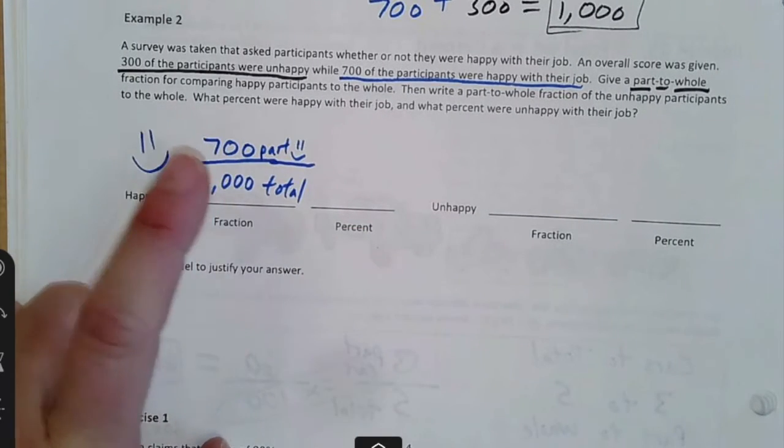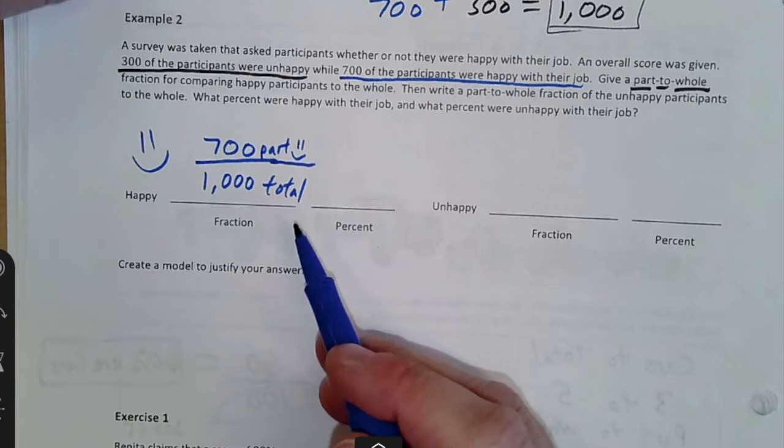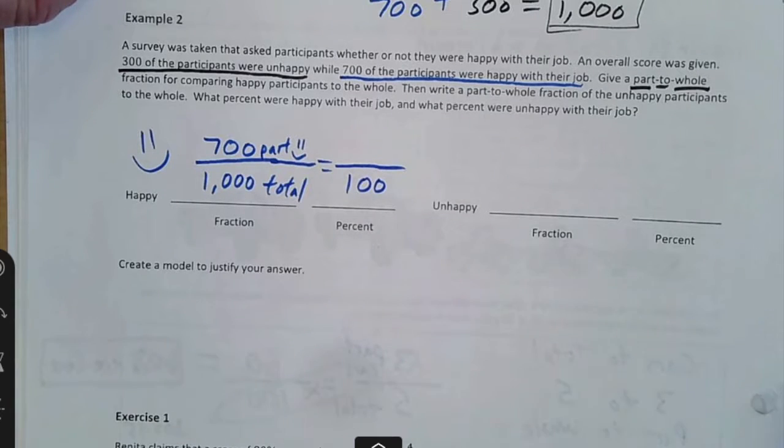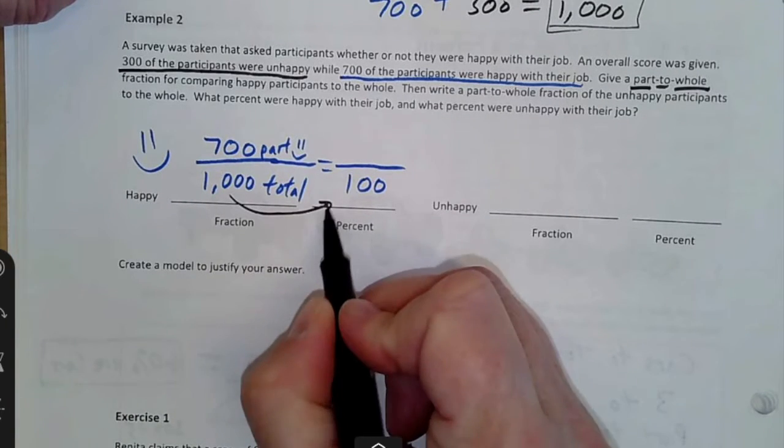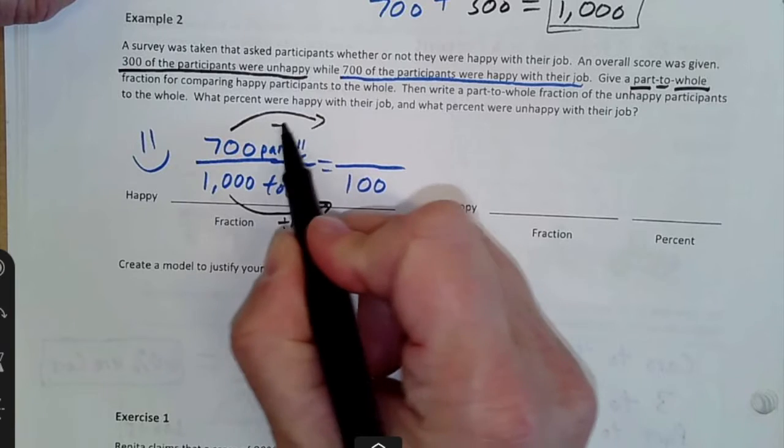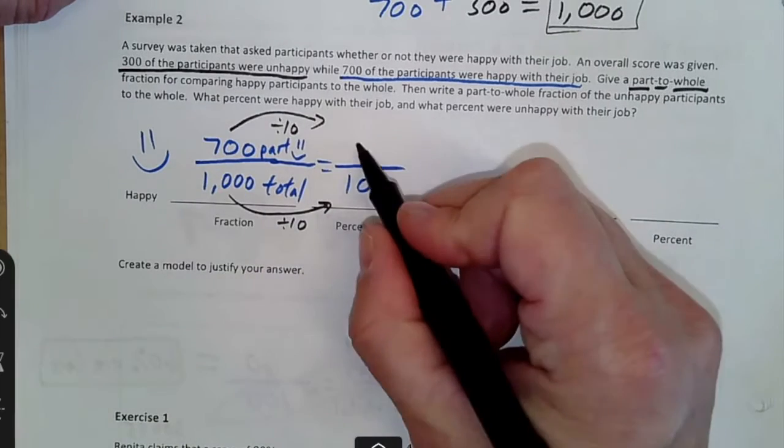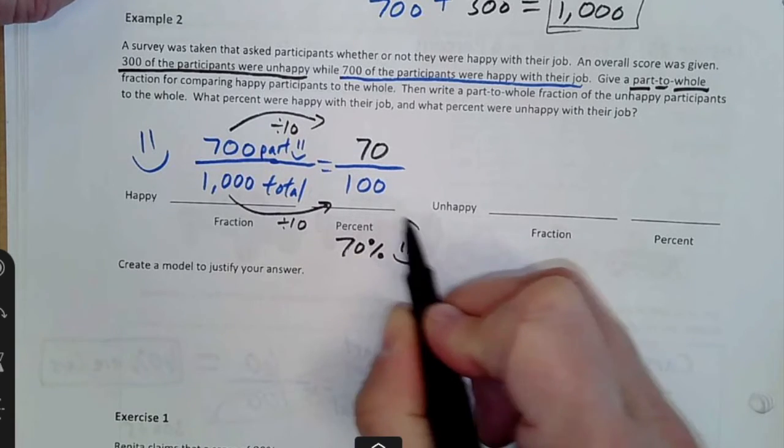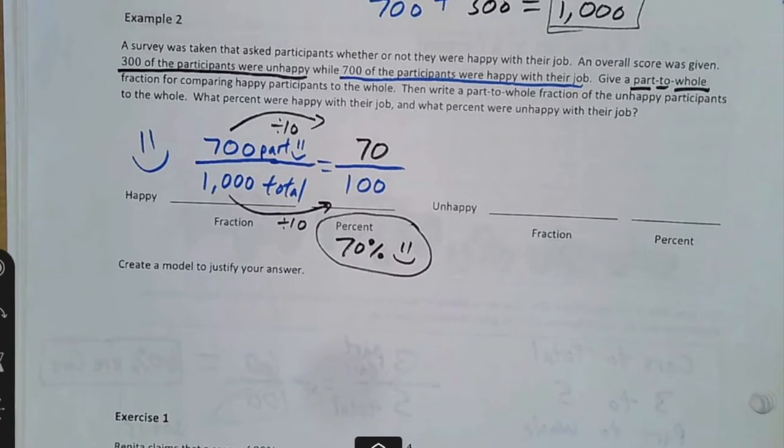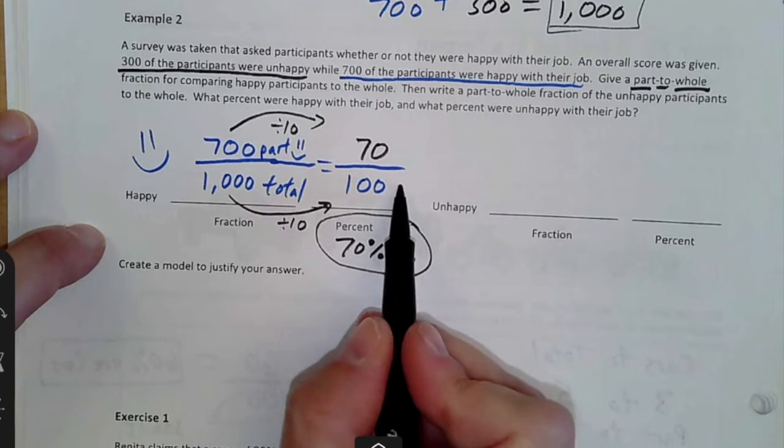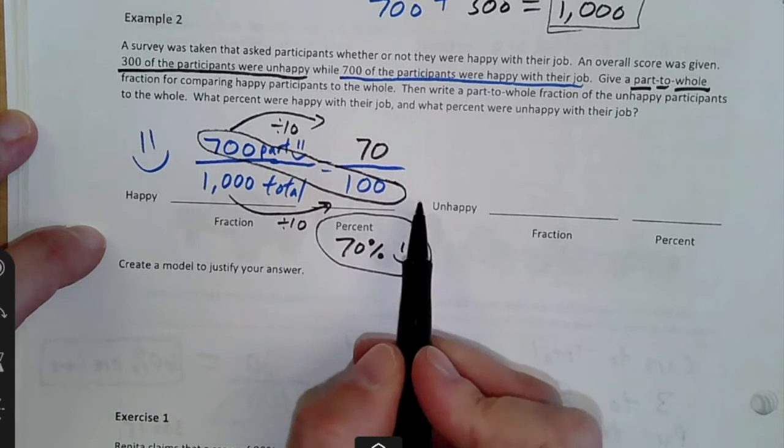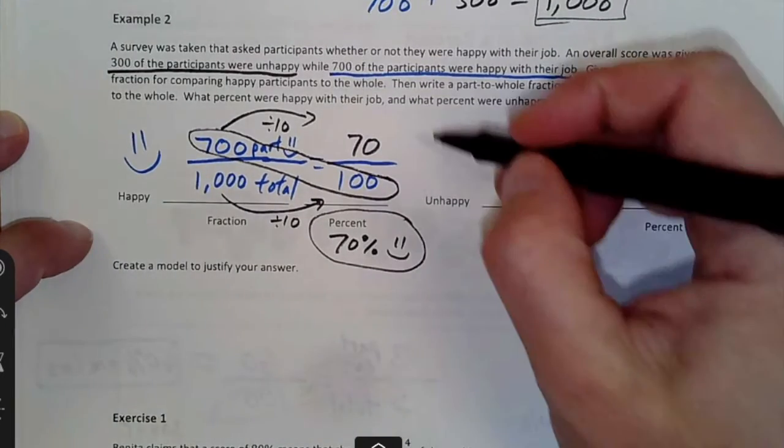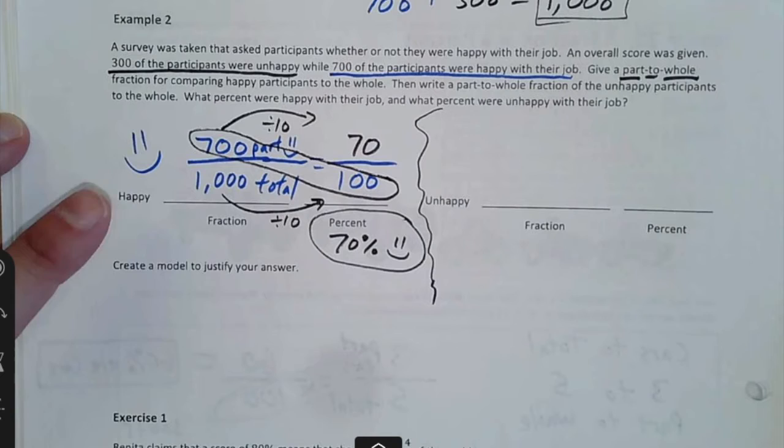But what percent is that? Well, we have 700 out of 1,000 and remember percents are out of 100. So can we make this a number out of 100? And some people see it, oh, I could have just taken this number and divided by 10 to make it smaller. And I could divide this by 10 to make it smaller. That's 70 out of 100. So what percent is that? 70% are happy. Could you solve this cross-products? 700 times 100, you get your answer and then divide by 1,000 and you still get 70. So that's the part to whole that we're happy.